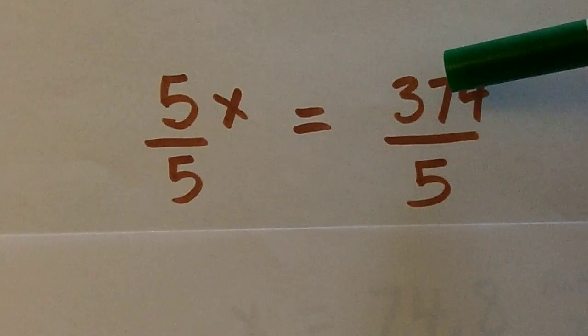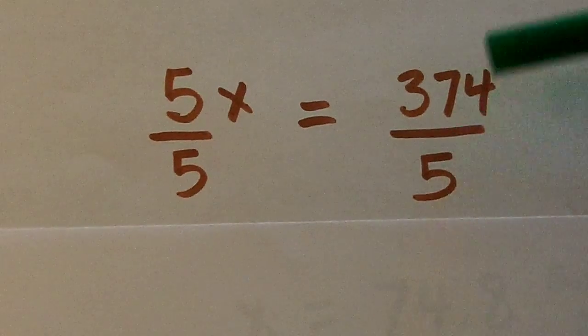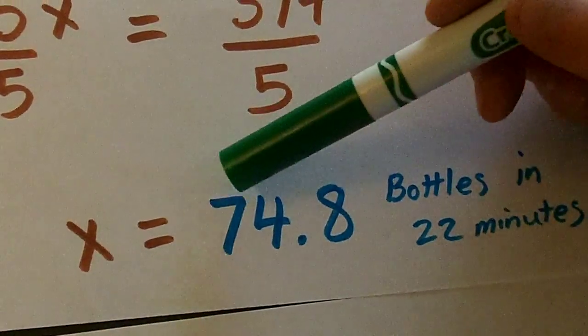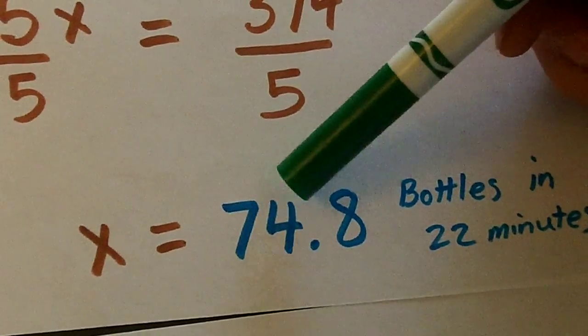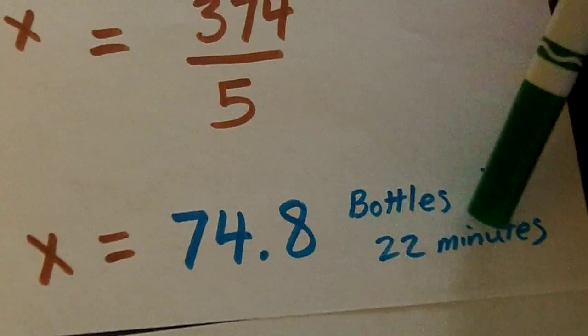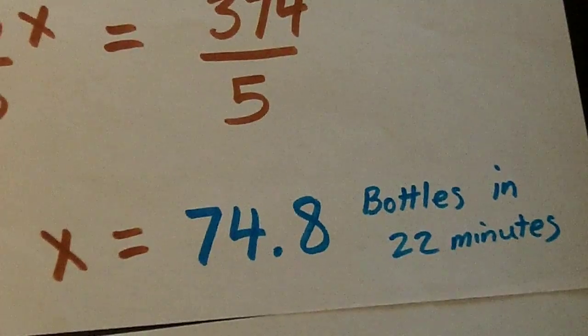So with our calculator, we divide 374 divided by five. And then our X is equal to 74.8 bottles in 22 minutes.